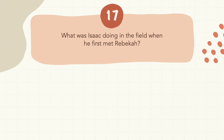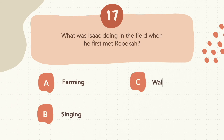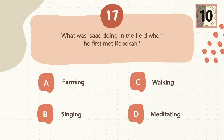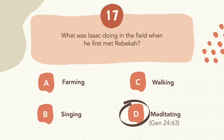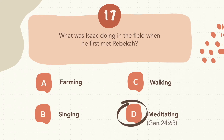Question 17: What was Isaac doing in the field when he first met Rebekah? The correct answer is D, meditating.